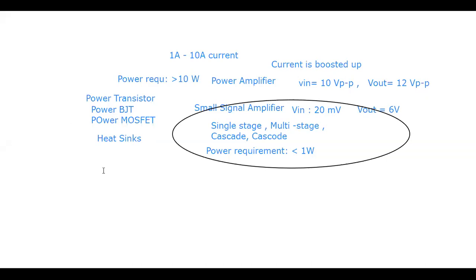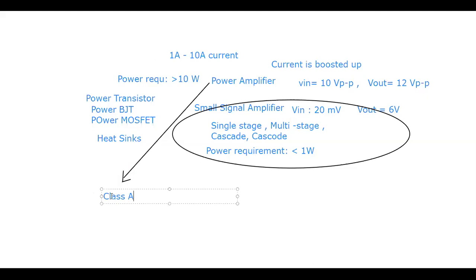This is Module 4. It starts with the requirement of a power transistor, then moves to power BJT and power MOSFET, and then covers why heat sinks are required and their characteristics. In power amplifiers, we also study various classes: Class A, Class B, Class AB, and Class C.